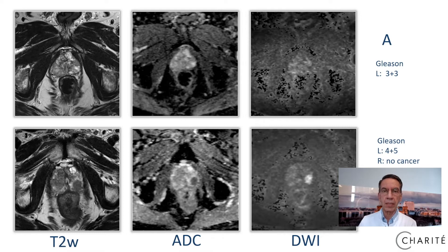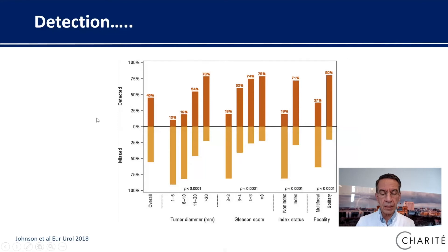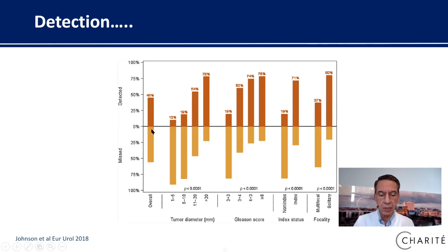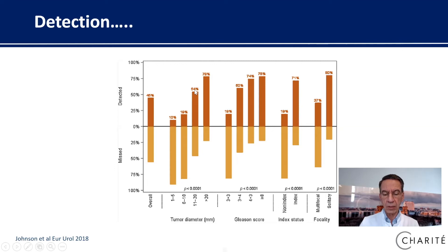So multiparametric MRI helps us to detect the most clinically significant prostate cancer. As published in a paper analyzing more than 1,200 prostate foci in 588 patients, most lesions — 52% — are not seen by MRI. However, with MRI we usually detect the larger cancers, larger than one centimeter, and, even more importantly, we usually detect the aggressive prostate cancers with parts of Gleason 4.